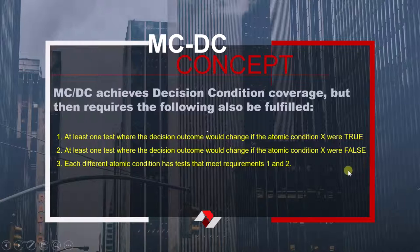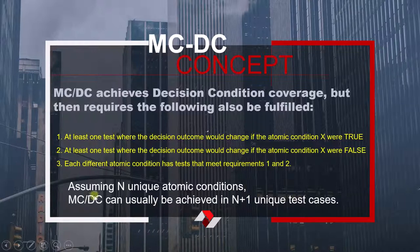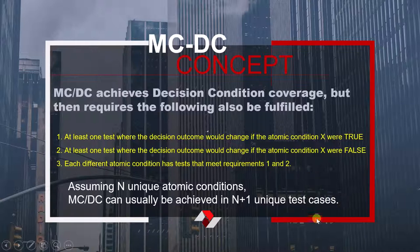I know this is a little bit confusing, and to visualize it properly I will give a practical example in the next video. But first, one more important point: assuming n unique atomic conditions, in order to achieve Modified Condition Decision Coverage you need n+1 unique test cases. So if you have 5 atomic conditions, you need 6 test cases to achieve MC/DC.